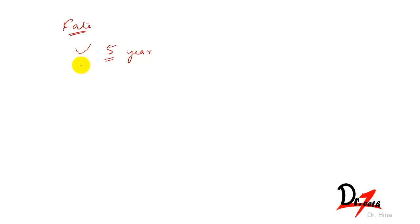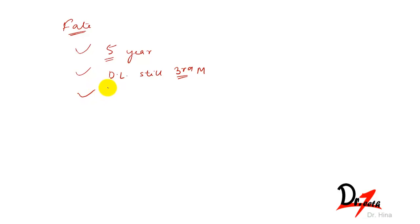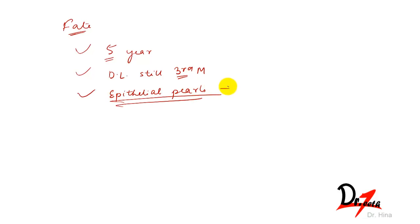The total activity of the dental lamina extends for a period of five years. You can find the dental lamina still active in the third molar region even after it has disintegrated elsewhere. Remnants of the dental lamina persist as epithelial pearls or islands within the jaw and gingiva, and these are called the rests of Serres.